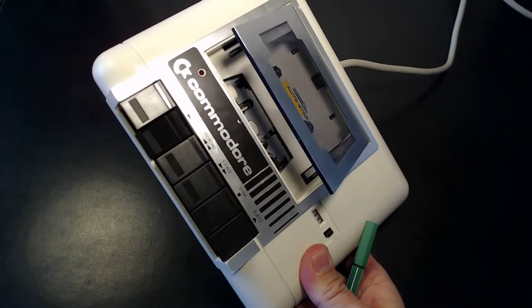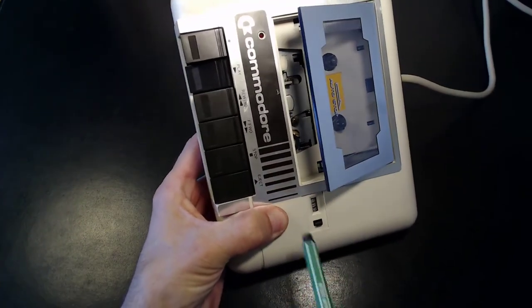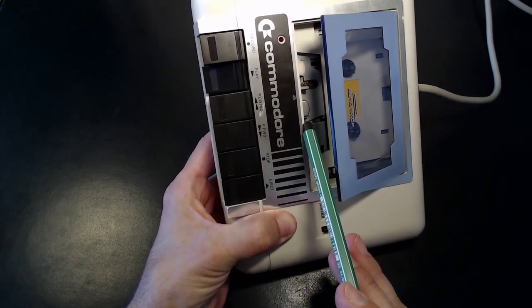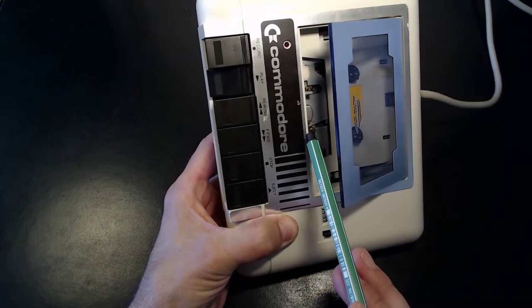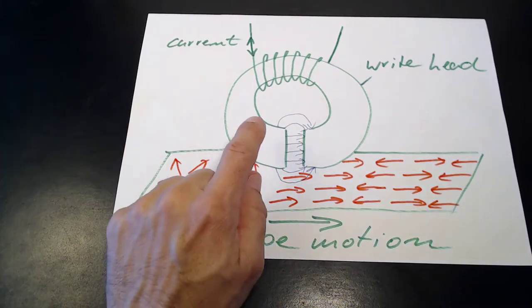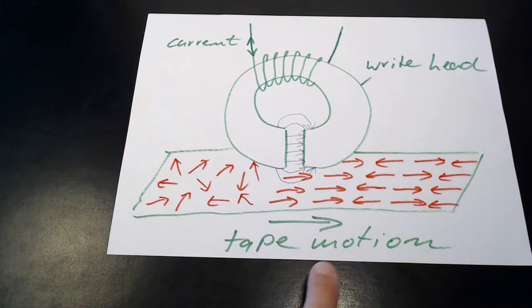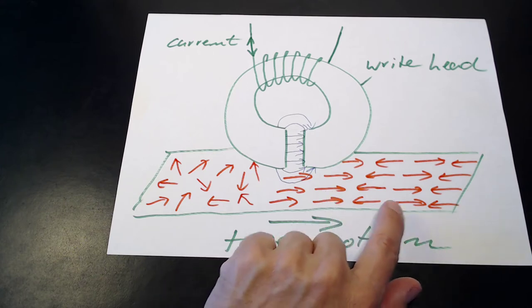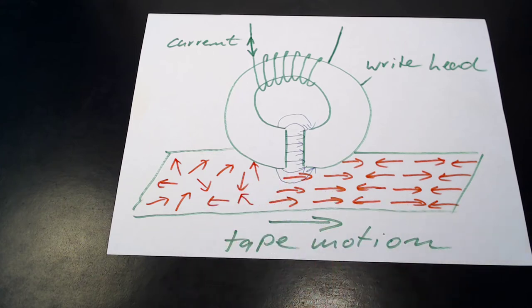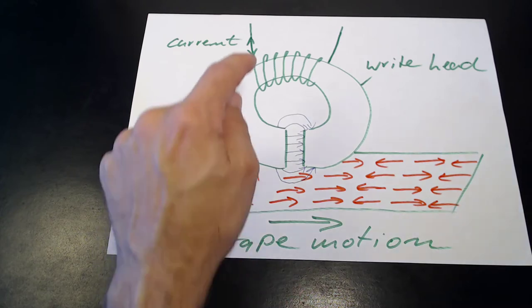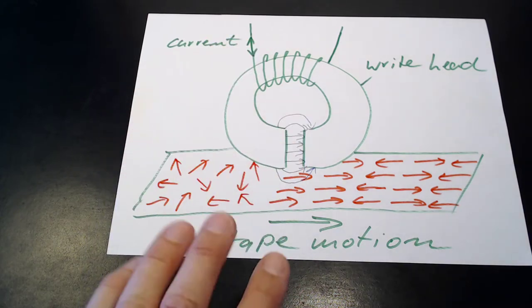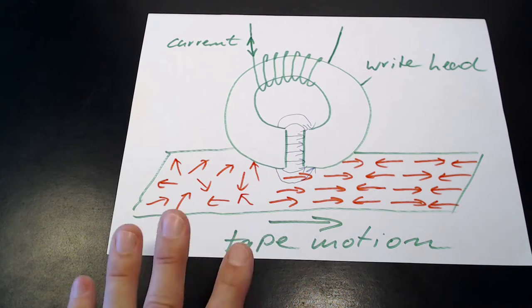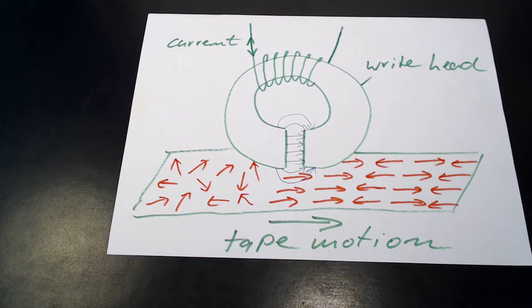At the write head, over here, the tape is exposed to the field of a little electromagnet. This electromagnet magnetizes the ferric oxide particles either to one or their opposite direction, depending on the sign of the current flowing through the coil of our write head. And that way, we can write a stream of digital information onto the moving tape.